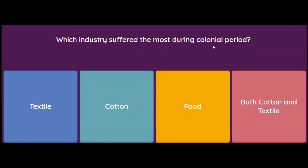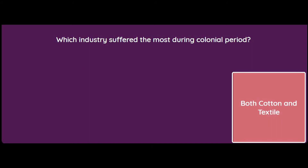Which industry suffered the most during the colonial period? Textile, cotton, food, or both cotton and textile? If you have read the book, it is both textile and cotton which suffered the most during the colonial period.